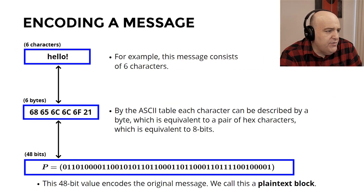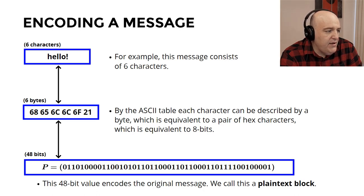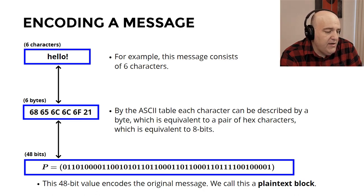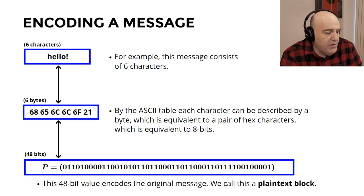For example, one way of doing this with English would be with an ASCII table. Every character of English is provided an 8-bit pattern, representable by a pair of hex characters. Any message in English can be represented this way. To encode the message 'hello!', which has six characters — five letters and an exclamation point — the hex values from the ASCII table give us a 48-bit plaintext block. This is called a plaintext block.